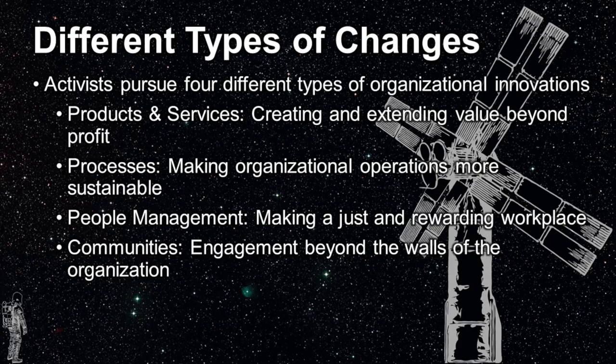Social movements work to create different types of changes in organizational innovations. The first are changes to products and services to create and extend value beyond profit to include social welfare. The second type of changes are to processes, working to make organizational operations more sustainable or equitable in some way. Thirdly are changes in people management, making a just and rewarding workplace for all involved. The last type of change is to communities, working to engage change beyond the walls of the organization.